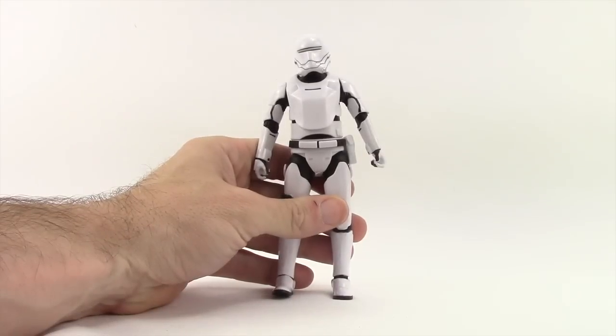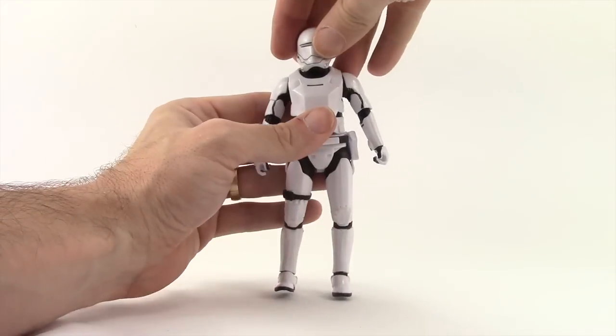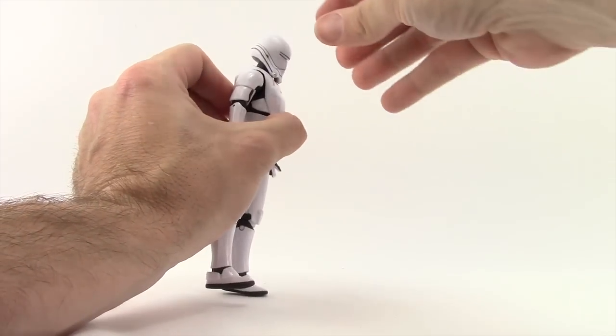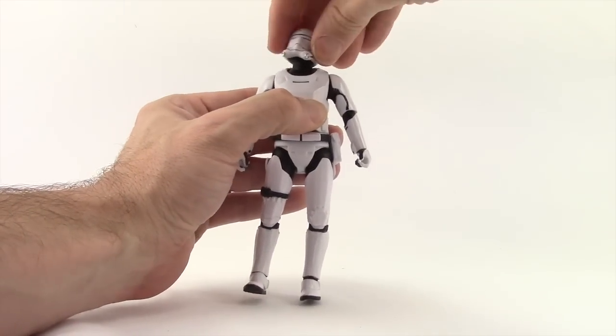Articulation is not too bad with this figure—definitely better than the Disney Elite version. The head is on a ball hinge joint, so he can look left, right, down, and up a little bit, and pivot his head side to side.